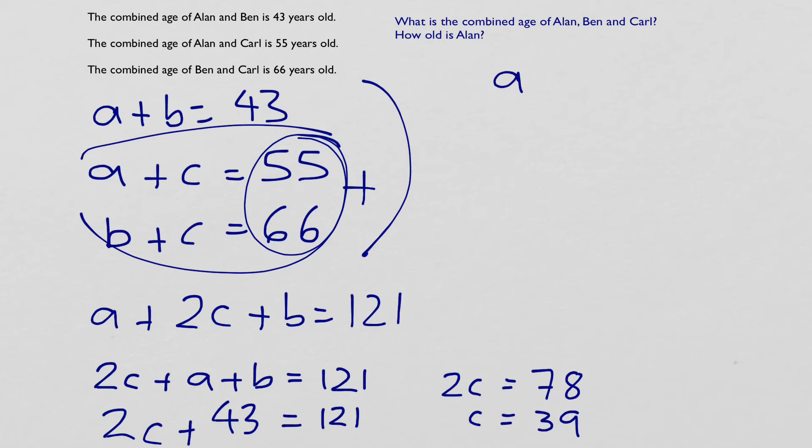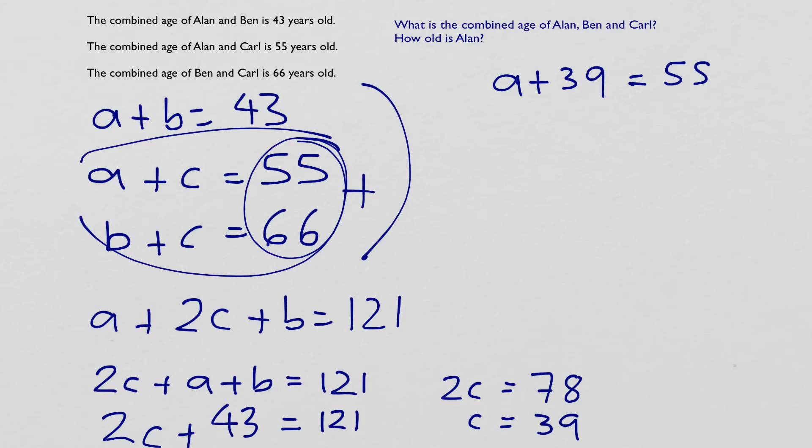And if we know Carl is 39, in that case, this equation here, a plus c equals 55 becomes a plus 39 equals 55. So Alan has to equal 16. And then once we know Alan is 16 and Carl is 39, we can just find out what Ben is. So I'm going to use this equation up here. Alan, which is 16, plus Ben equals 43. So Ben has to equal 27.